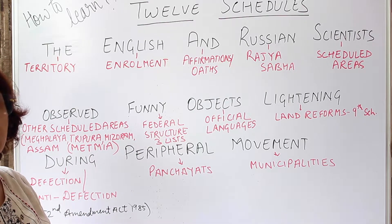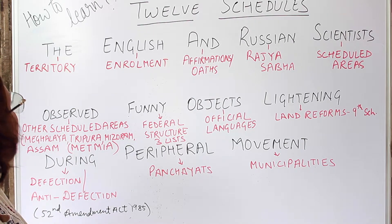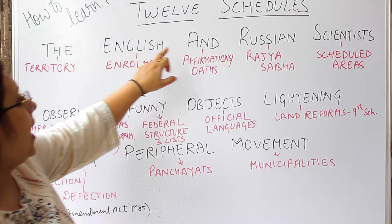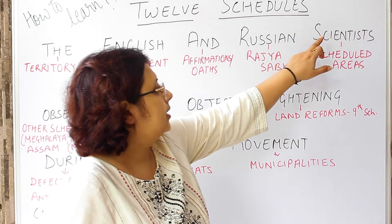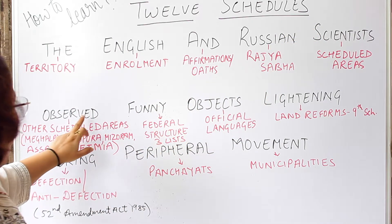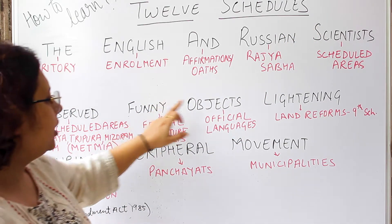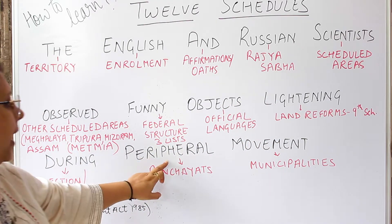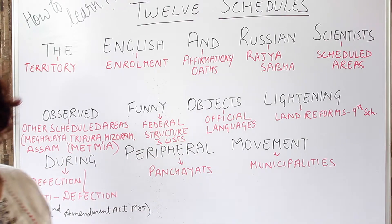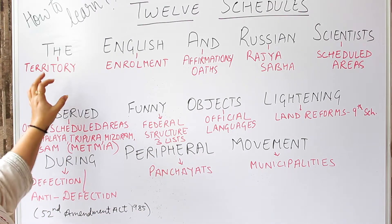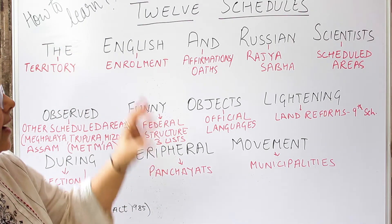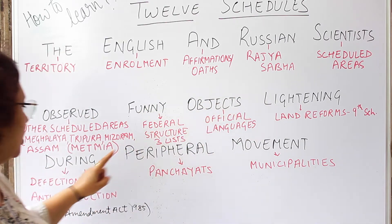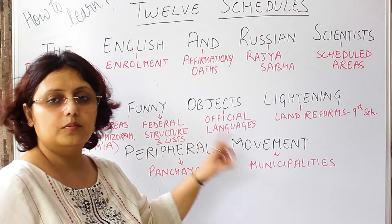Learning one sentence is not a big deal. Here the sentence goes: 'The English and Russian scientists observed funny objects lightning during peripheral movement.' You just have to learn this one sentence.